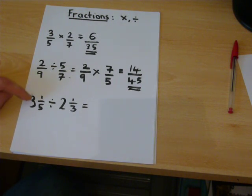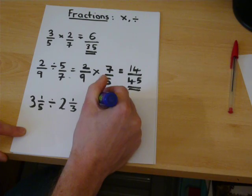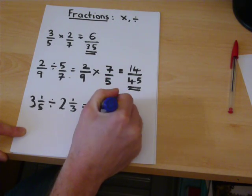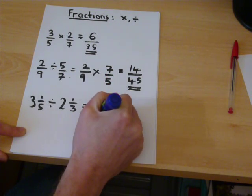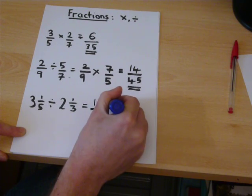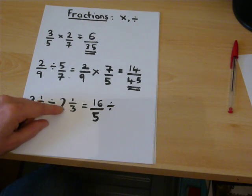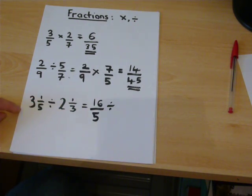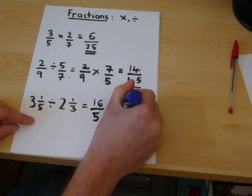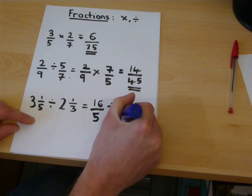Now, 3 and 1 fifth. We do 3 times 5, which is 15, plus the 1, which is 16, which is 16 over 5. Divide by 2 times 3 is 6, plus the 1 is 7 over 3.